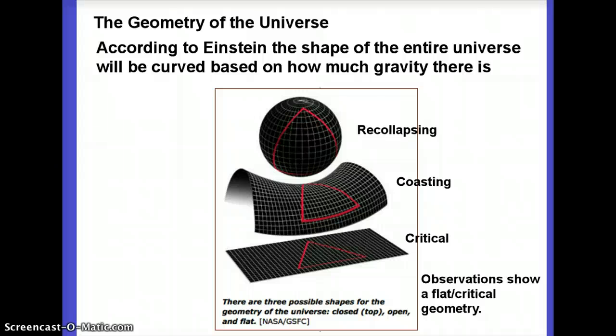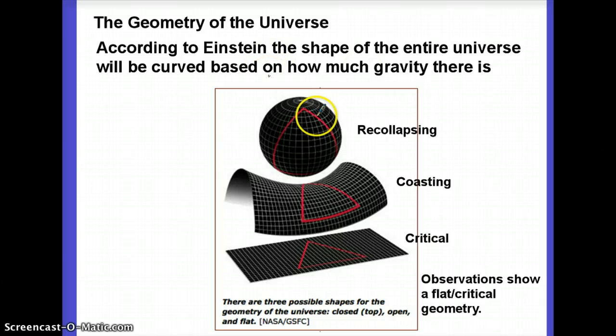Those rules of geometry are totally different for a sphere and for a saddle, and you can actually derive whole new sets of theorems for each — you can even take college classes where you do that. By studying the arrangements of objects in space, you can study the geometry of the universe itself. When astronomers did that, they found that the geometry of the universe is basically Euclidean — it's flat — which is kind of nice because the math is a lot easier.